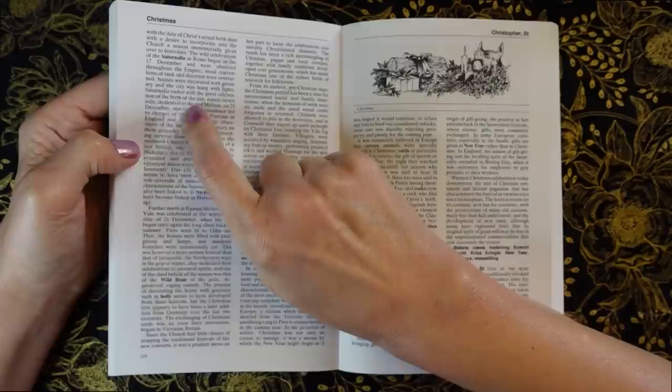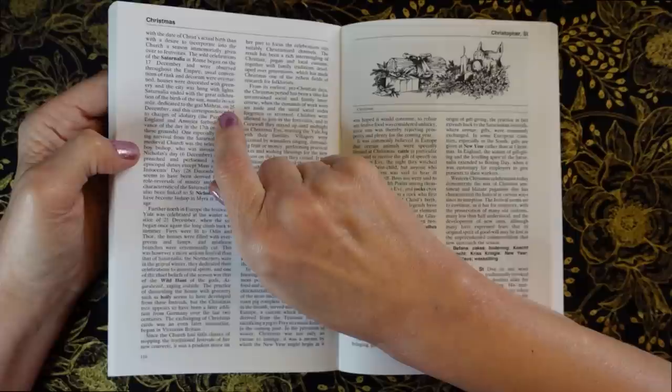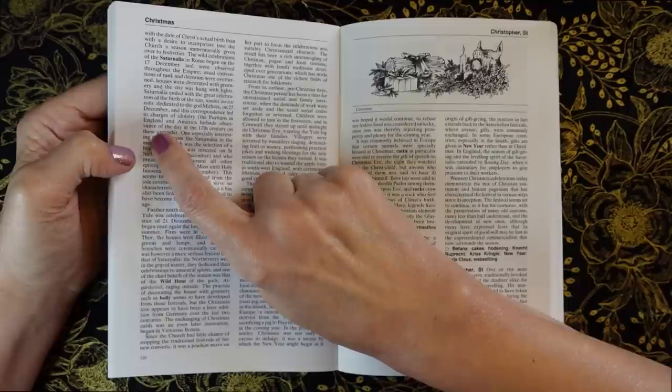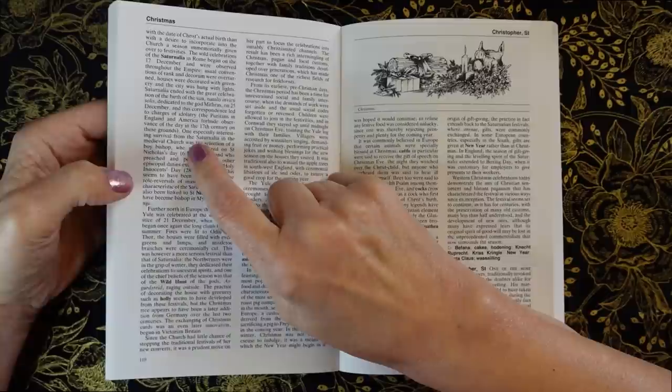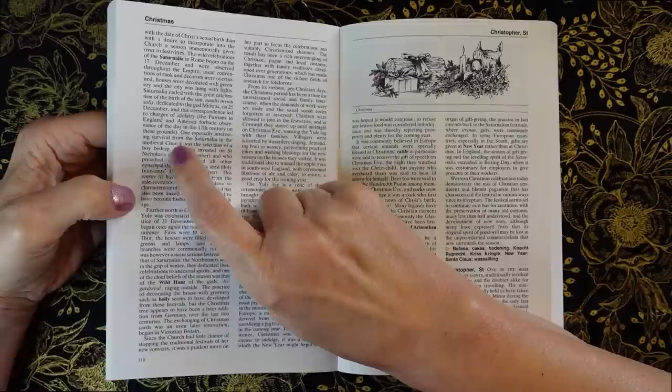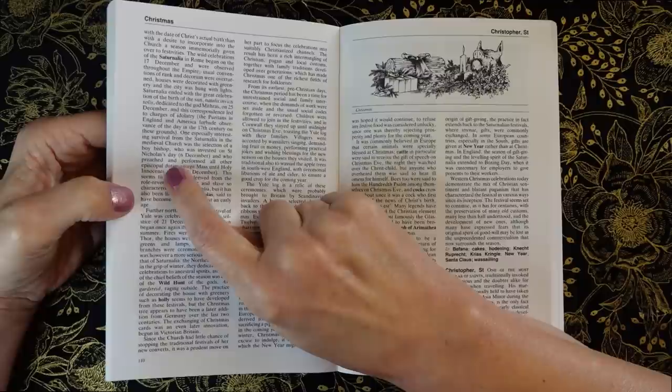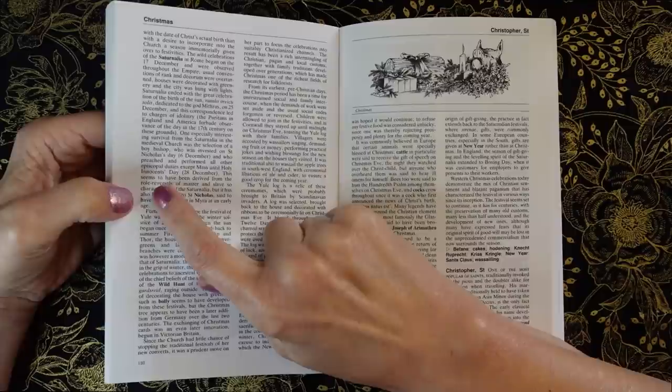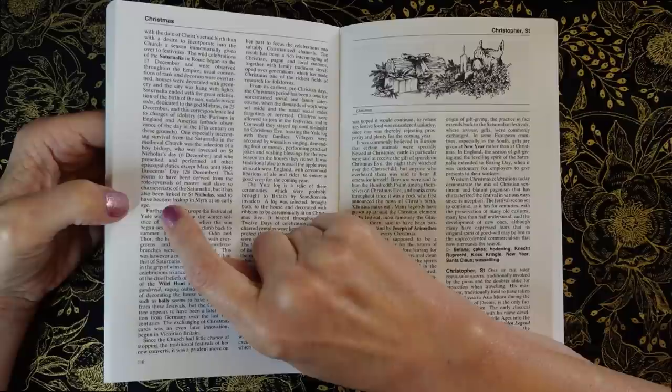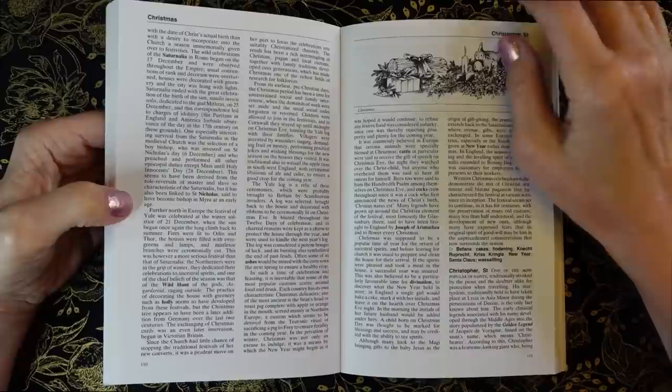Saturnalia ended with the great celebration of the birth of the sun, Natalis Invicti Solis, dedicated to the god Mithras on the 25th of December, and this correspondence led to charges of idolatry. The Puritans in England and America forbade observance of the day in the 17th century on these grounds. One especially interesting survival from the Saturnalia in the medieval church was the selection of a boy bishop who was invested on St. Nicholas's day, 6th of December, and who preached and performed all other episcopal duties except mass until Holy Innocents Day, 28th of December. This seems to have been derived from the role reversals of master and slave, so characteristic of the Saturnalia, but it has also been linked to St. Nicholas, said to have become bishop in Myra at an early age.